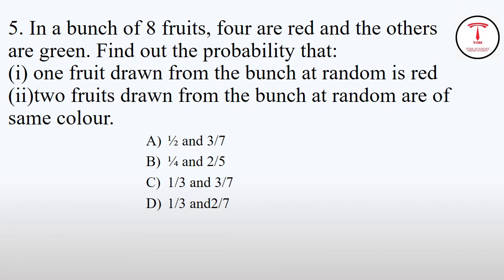Next question: In a bunch of 8 fruits, 4 are red and the others are green. Find out the probability that: First, one fruit drawn from the bunch at random is red. Second, two fruits drawn from the bunch at random are the same color. A) 1/2 and 3/7, B) 1/4 and 2/5, C) 1/3 and 3/7, D) 1/3 and 2/7.